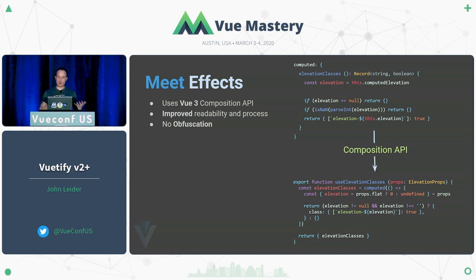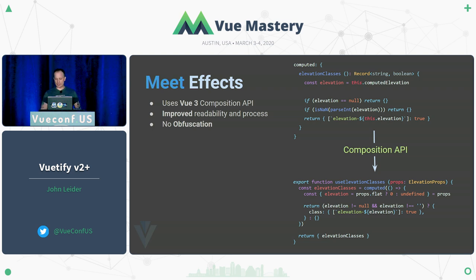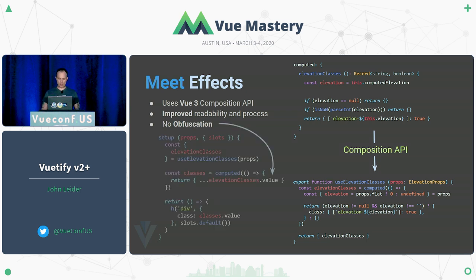Effects are the Composition API — we go through and reestablish good readability and process from the coding guidelines we've designated. You can now see where information comes from. With the Composition API, we made a couple tweaks for optimization, but it's essentially the same thing. As opposed to having a computed class, we just have a function that returns that same information.